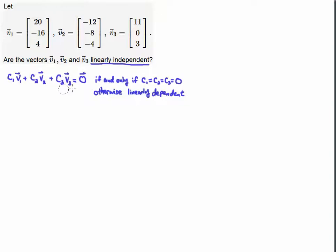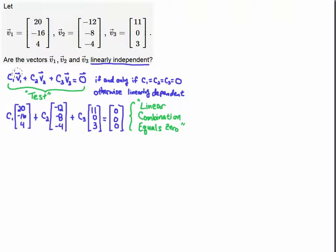So let's set up this linear combination. I'm just going to apply the definition: c1 times v1 plus c2 times this vector plus c3 times this vector equals the zero vector, which is the vector with all zeros. This condition is our test for linear independence or dependence. I've just written this equation, this linear combination, and set it equal to zero.